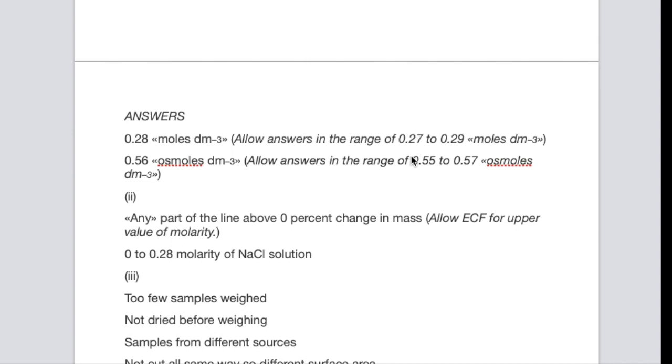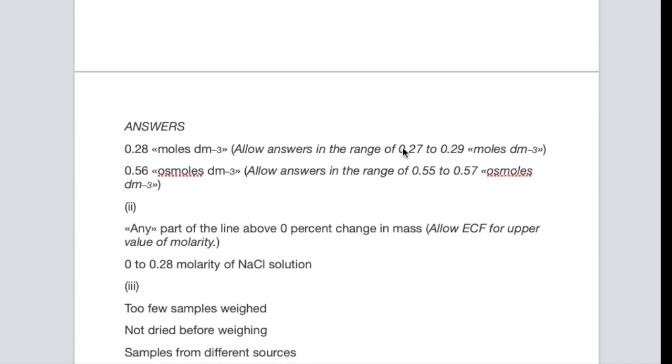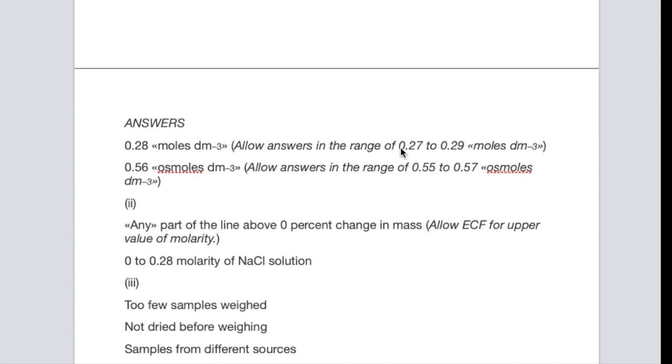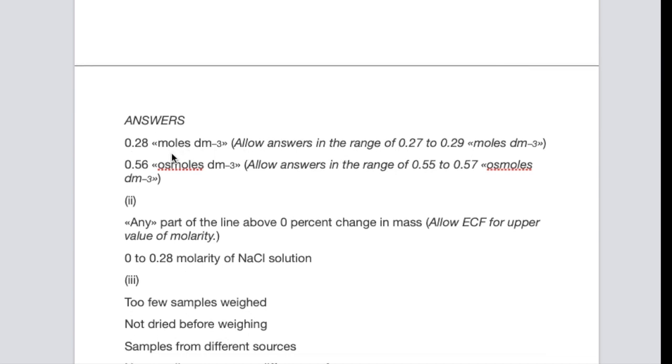Because osmoles can be found by doubling the molarity, because you have 0.28 moles per dm3, but you've got two ions in solution, sodium and chloride, and that's multiplied by 2. That is not necessary. You can get your answer, your full mark, by putting your answer in moles per dm3.